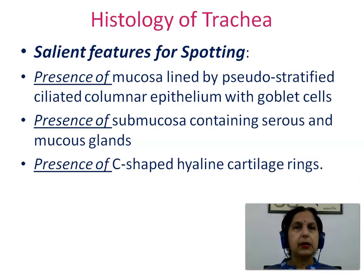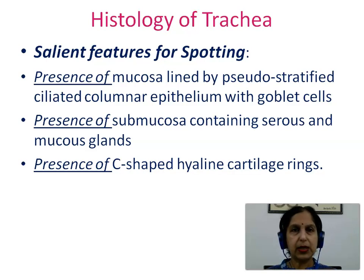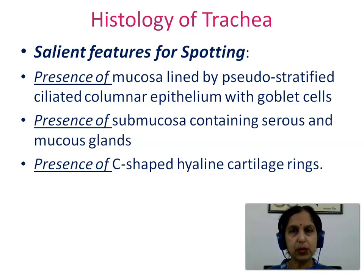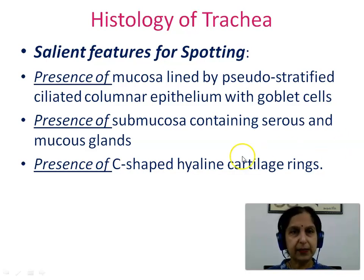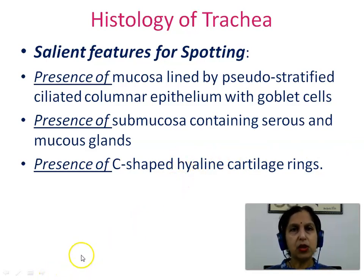The key features for spotting this slide would be: presence of mucosa lined by pseudostratified ciliated columnar epithelium with goblet cells, presence of submucosa containing serous and mucous glands, and presence of C-shaped hyaline cartilage rings. Thus we have studied an important slide of histology of trachea in this video.